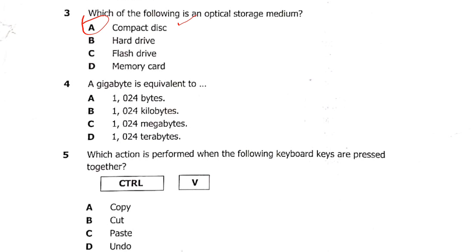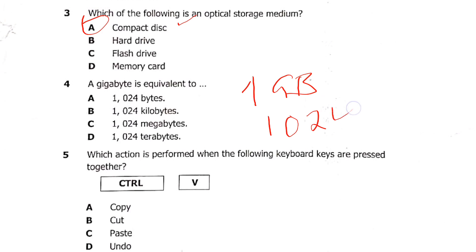Question 4: a gigabyte is equivalent to — A: 1024 bytes, B: 1024 kilobytes, C: 1024 megabytes, or D: 1024 terabytes. When you say 1 GB, 1 GB is equivalent to 1024 megabytes, so the answer is C.